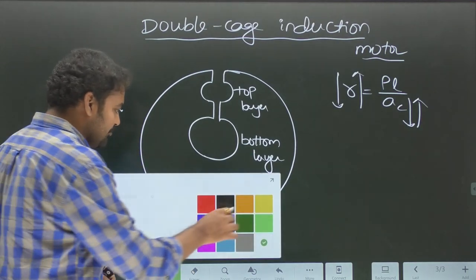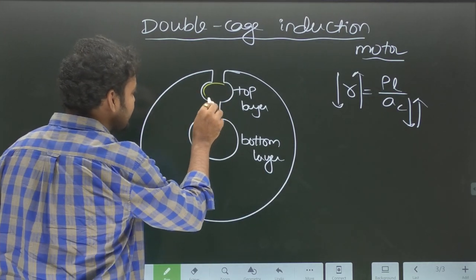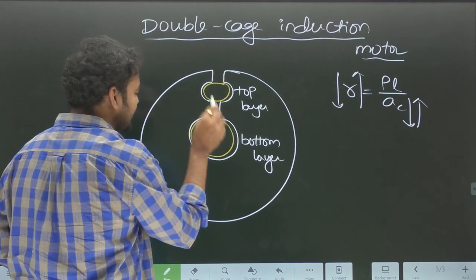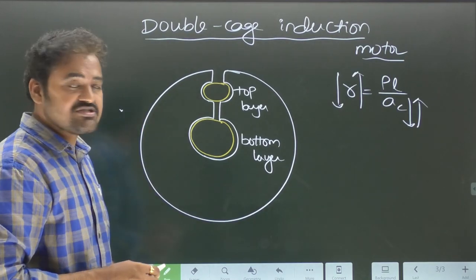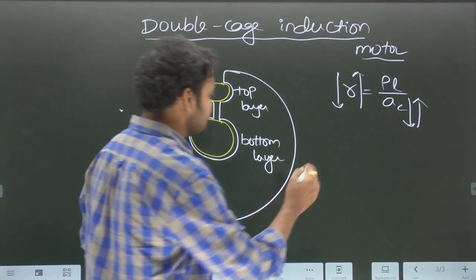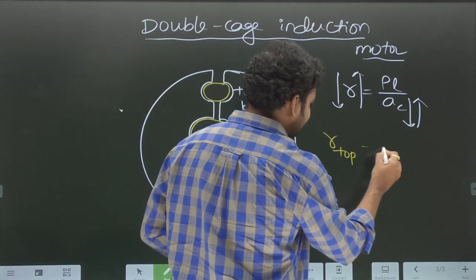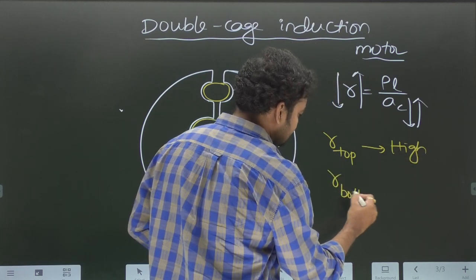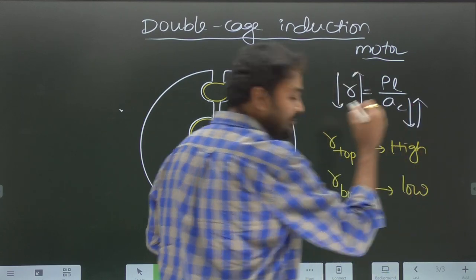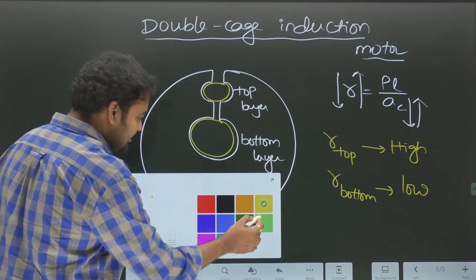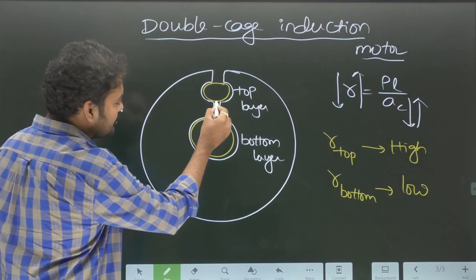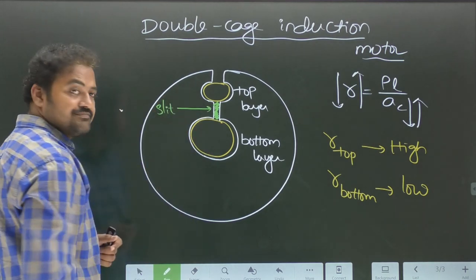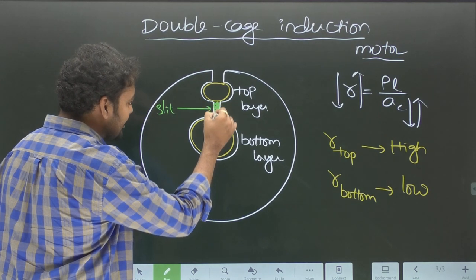We place a low cross-sectional area copper conductor in the top layer and a higher cross-sectional area conductor in the bottom layer. Due to that, the top layer offers high resistance and the bottom layer offers low resistance. Also, looking carefully, there is a small gap available between the top layer and bottom layer, known as a slit. This slit is filled with an aluminum material, meaning the top layer and bottom layer are in thermal contact with each other.